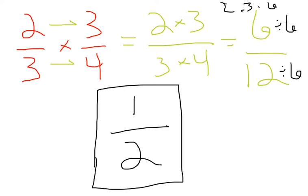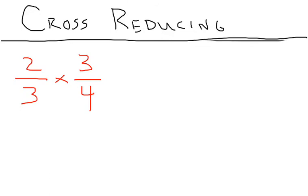Now, there is something that we can do, and that is called cross-reducing. With cross-reducing, what we actually do is we reduce the problem before we get to the end — we reduce first, and then we multiply.